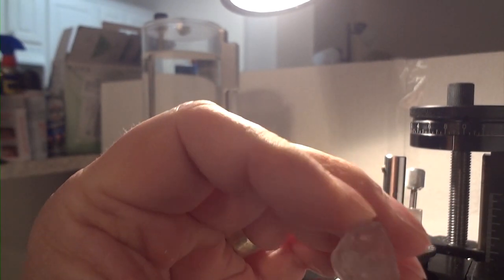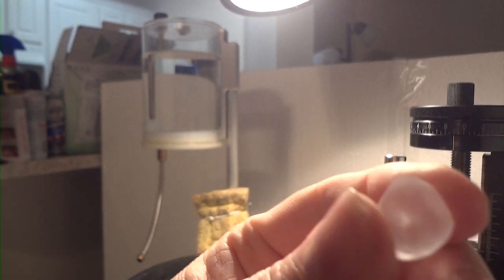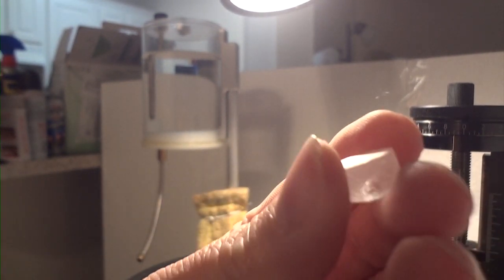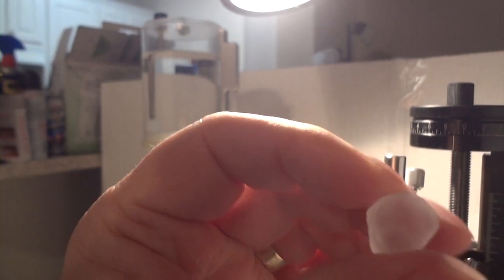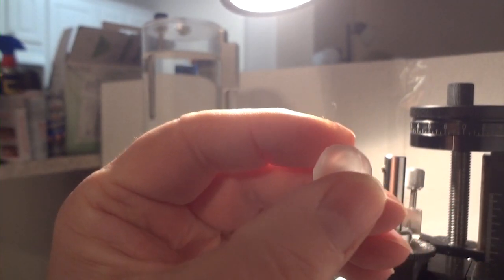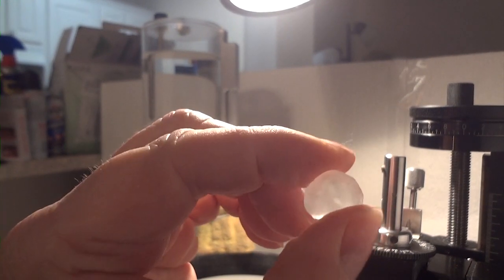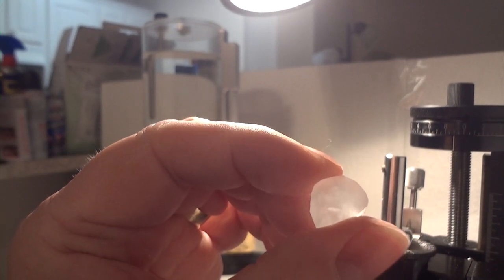I'll use two-part epoxy to glue the stone to the dop, and this stone started out just under 30 carats before I started preforming it and shaping it. So I'm guessing that I'll most likely end up with a gemstone between five and six carats when I'm done. We'll find out.